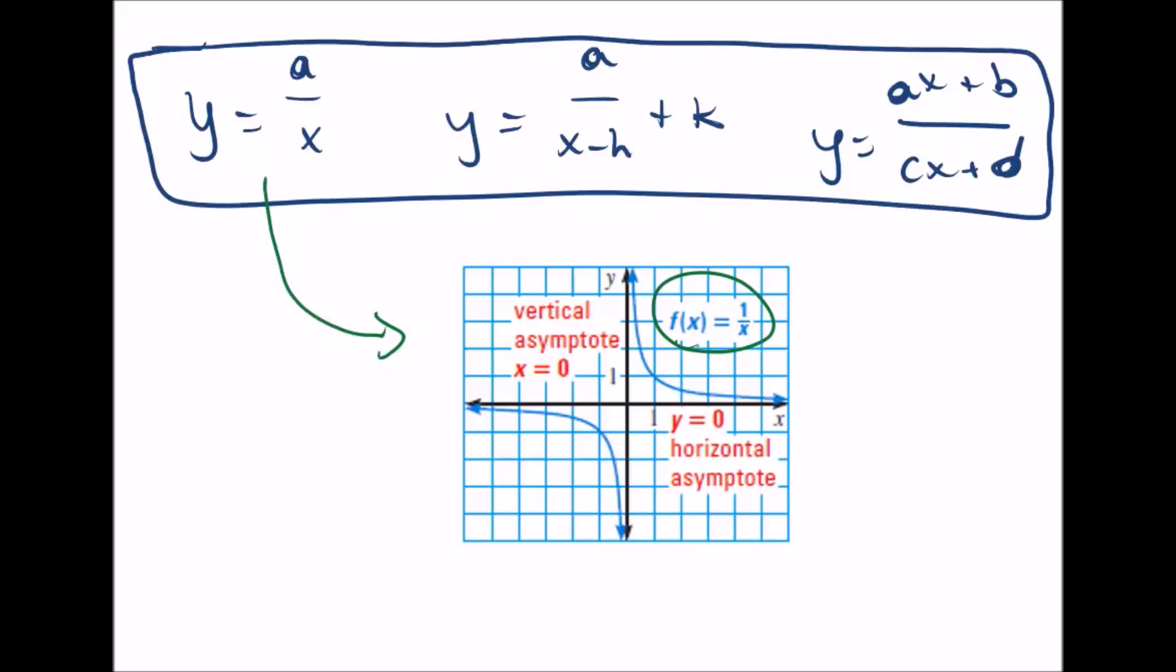So we'll start with y equals one over x. This is from y equals a over x, just like we talked about inverse variation y equals k over x. So in this most simple form, the graph looks like this.